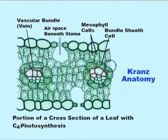Kranz is the German word for wreath, as the bundle sheath surrounds the vascular bundles and resembles a wreath or some arrangement in a ring form. The mesophyll cells do not have rubisco. The bundle sheath cells have rubisco and fix carbon dioxide just like in C3 plants. But where do they get the carbon dioxide from? The mesophyll cells have another carbon dioxide-fixing enzyme called PEP carboxylase or PEPC.